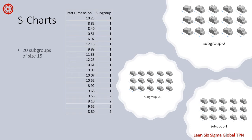To illustrate, consider the engineer team at ABC Company. The engineer wants to know if the part dimension of a production line is in control. As the production line produces hundreds of parts each day, the engineer can reasonably collect large subgroups of data. The engineer decides to sample 15 parts each hour for 20 hours and measure the dimension of each part. The resulting data set consists of dimension data for 20 subgroups of size 15.